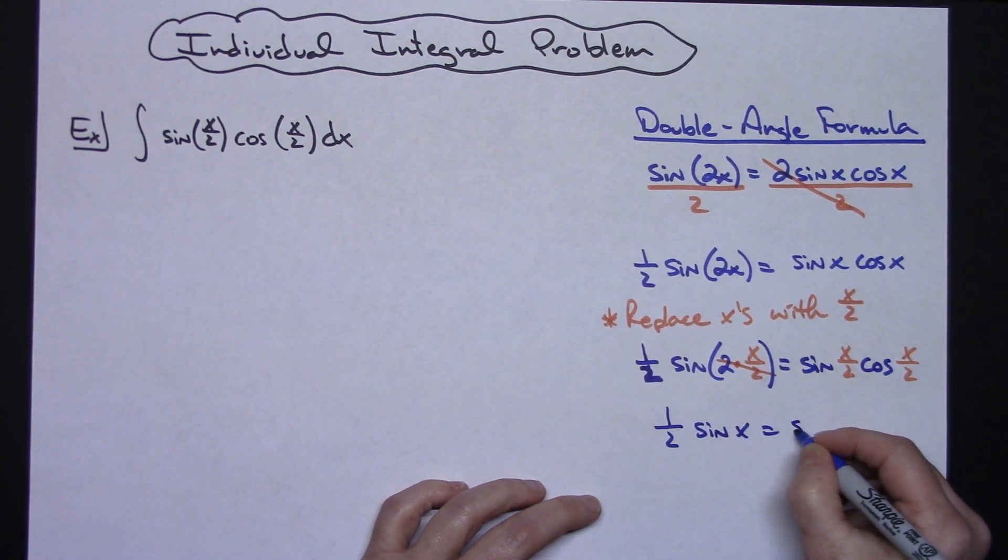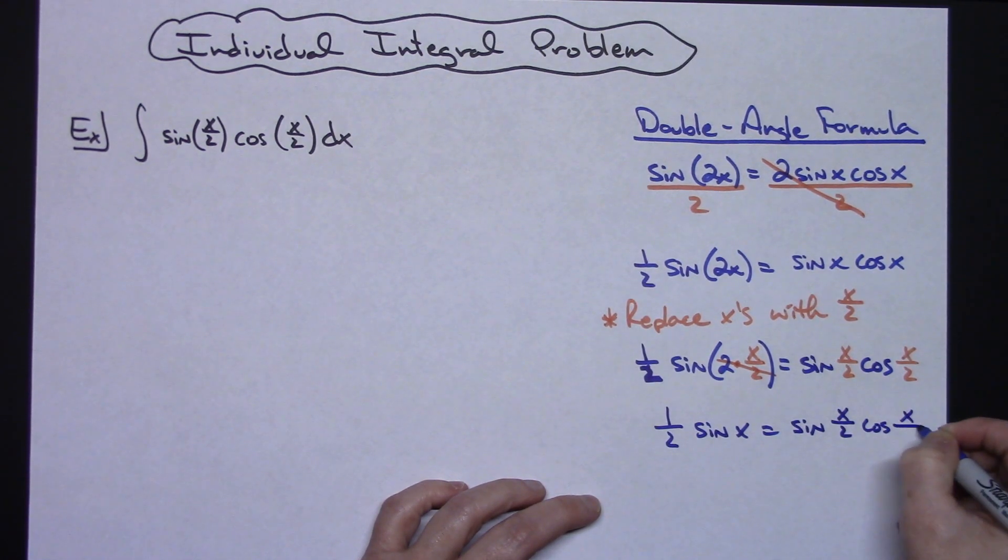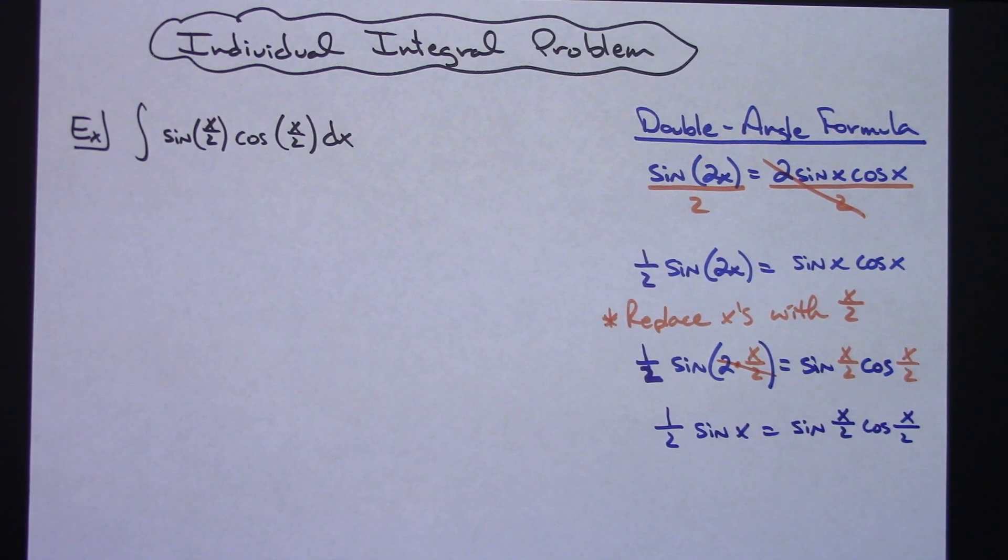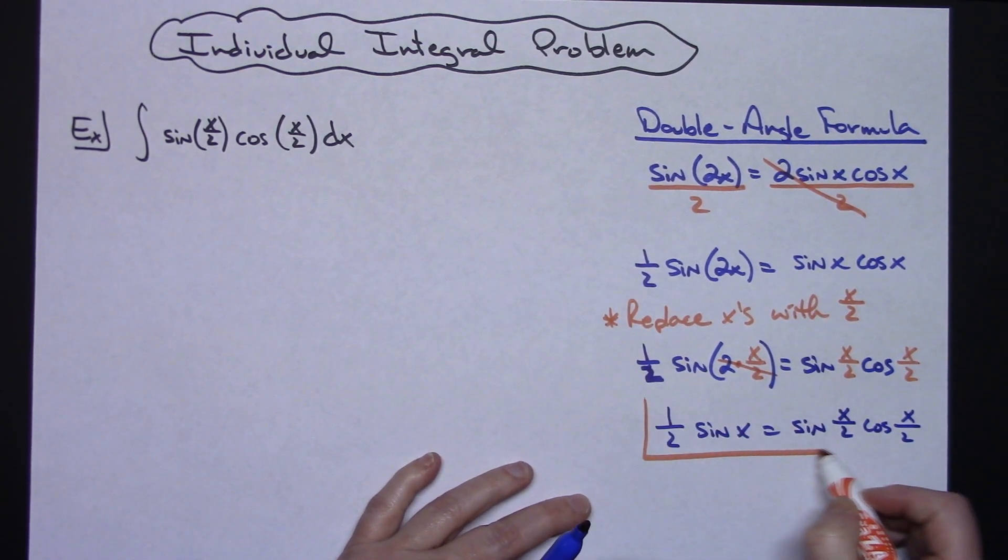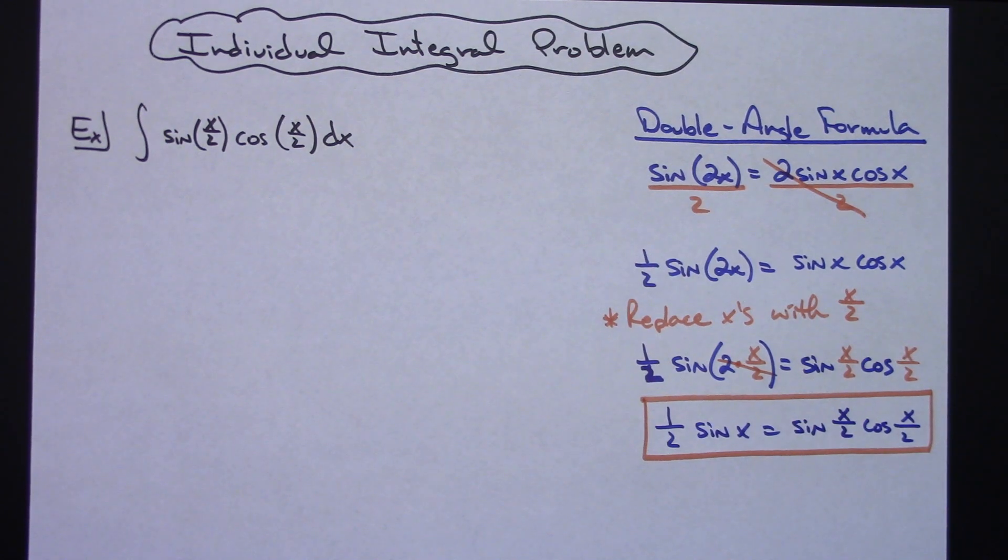And then that right hand side I am not going to do anything with because I now have it looking exactly like I need it to look. Okay so I have manipulated that original double angle formula into something now that I can use.